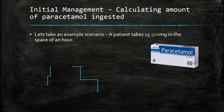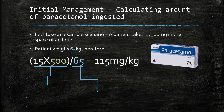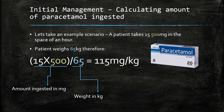Here is an example scenario. To calculate the amount of paracetamol ingested, we need to know how many tablets have been ingested and the weight of the patient. A single tablet holds 500 milligrams of paracetamol. Using an example of a patient who weighs 65 kg, we calculate the amount ingested by multiplying 500 by the number of tablets taken, then dividing by the weight in kg (65). This gives a paracetamol concentration of 150 milligrams per kilogram, which is toxic.